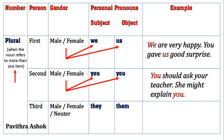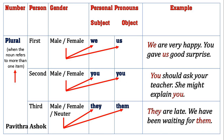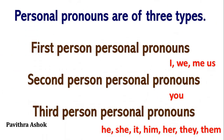Next one: third person personal pronoun in plural number. For male, female, and neuter gender, subject is they and object is them. For example: 'They are late. We have been waiting for them.' So, personal pronouns are of three types.